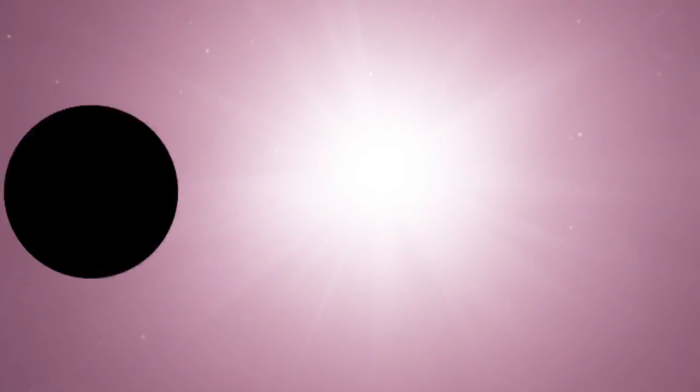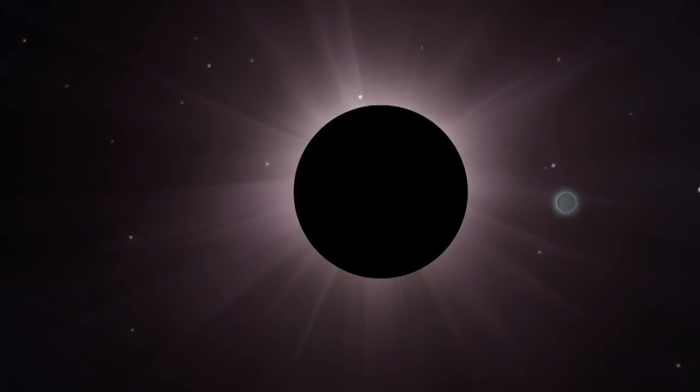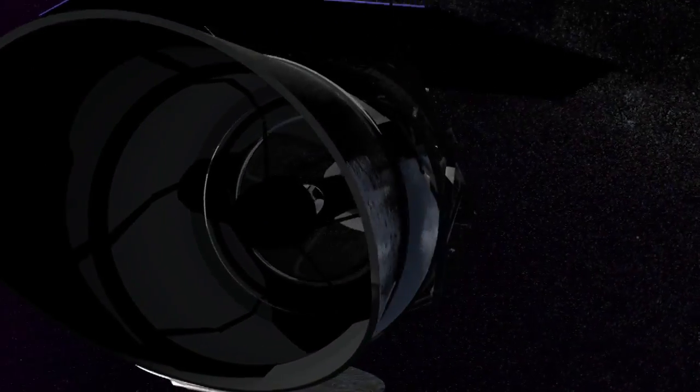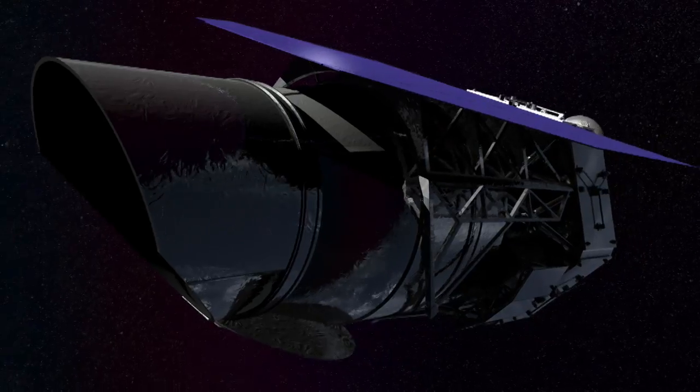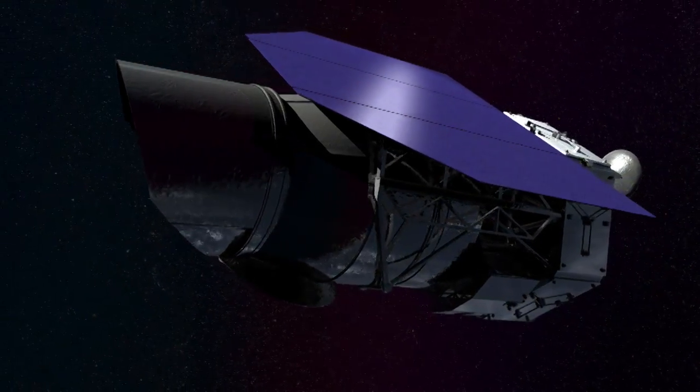What WFIRST will do is we'll have what we call a coronagraph. A coronagraph lets us image and characterize really dim planets next to very bright stars. No matter how good a telescope that you build, it's always going to have some residual errors. This is going to be the first time that we're going to fly an instrument that contains these high-format deformable mirrors. They're going to let us correct for errors in a telescope that's never been done in space before.